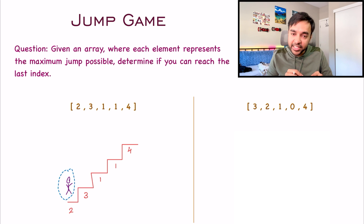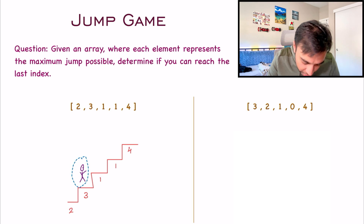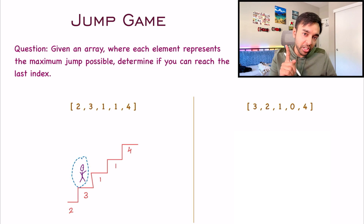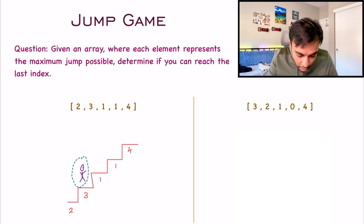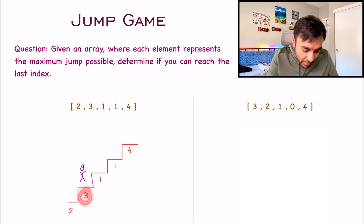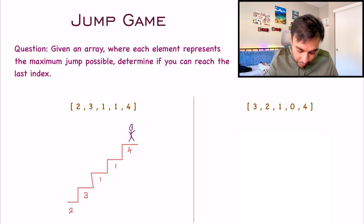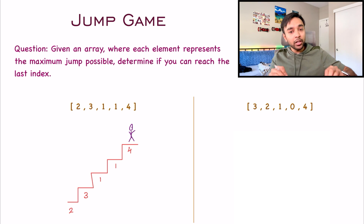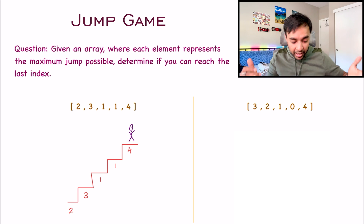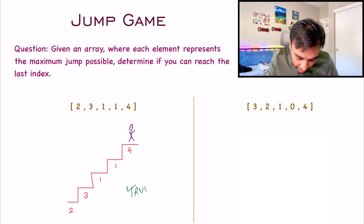For our first test case with array [2,3,1,1,4], if I am starting at position two, I take a jump of just one position. Now I can take a maximum of three jumps, so I stand there and take a jump of three positions. I was able to reach my final step, so for the first test case you return true.